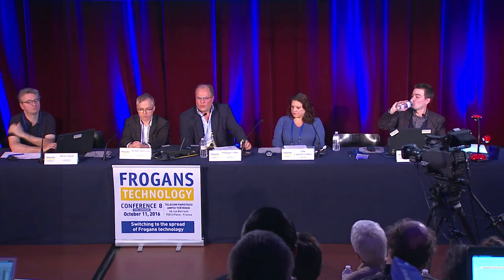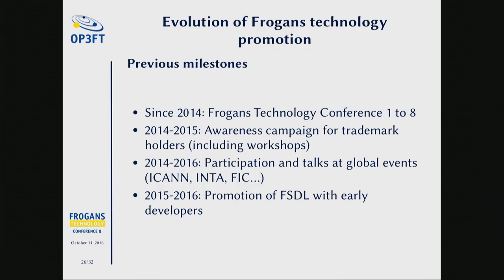Historical background to start with. The first thing is meetings with the ecosystem. We've had eight conferences — this is the eighth Frogan's technology conference — which allows members of the ecosystem to meet one another. We've developed various topics for each individual conference that would be of interest to the ecosystem. Frogan's technology is not dedicated to just one category; it can potentially have an impact on all members of the ecosystem.